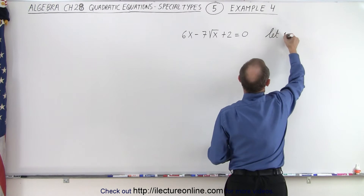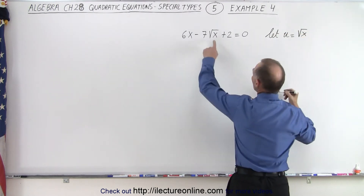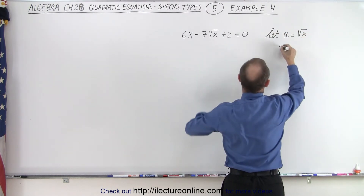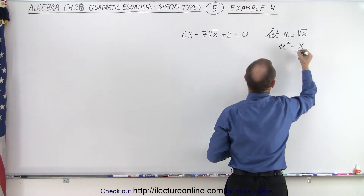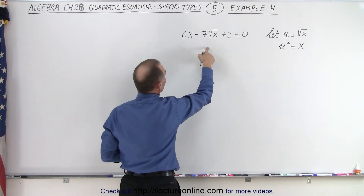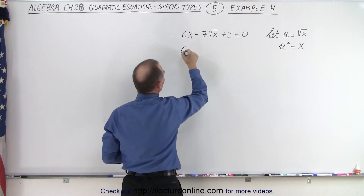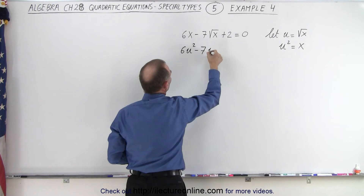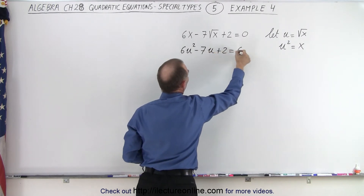Let u equal the square root of x. If we square both sides, u squared is therefore equal to x. That means this equation can then be rewritten — instead of 6x, we can write it as 6u squared minus 7u plus 2 equals 0.